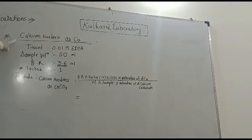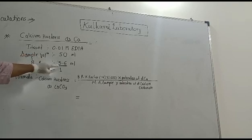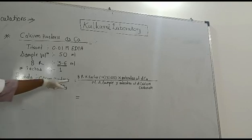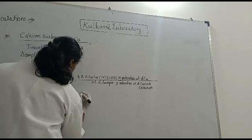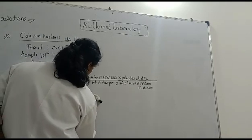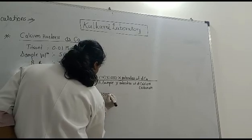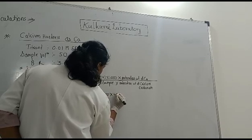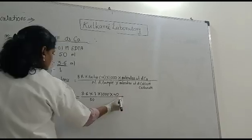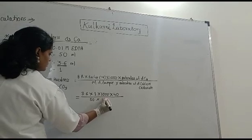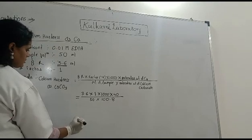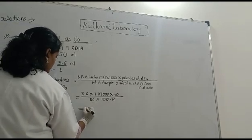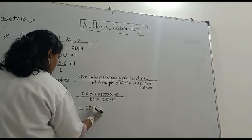This is the calculation formula for calcium hardness as calcium. The titrant is 0.01 molar EDTA, sample volume is 50 ml, burette reading is 3.6 ml, and the factor is 1. Putting all these values into the formula: calcium hardness as calcium carbonate equals burette reading 3.6 ml × factor 1 × 1000 × molecular weight of calcium (40), divided by 50 × molecular weight of calcium carbonate (100). After calculation, the calcium hardness comes out to be 28.8 mg per litre.